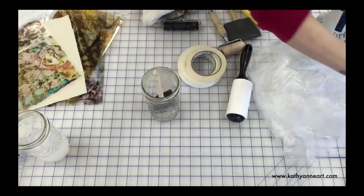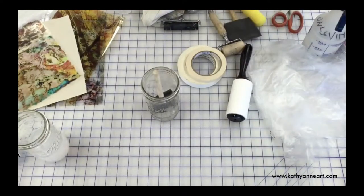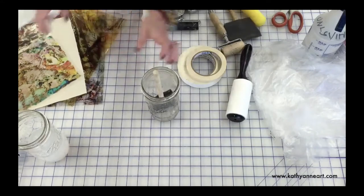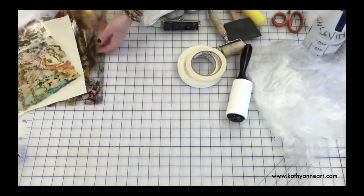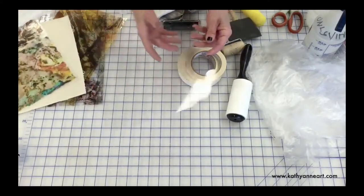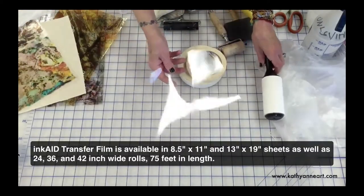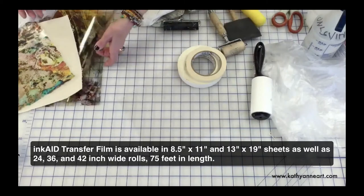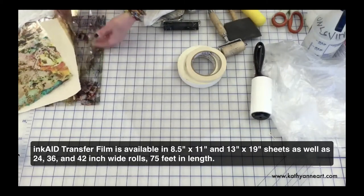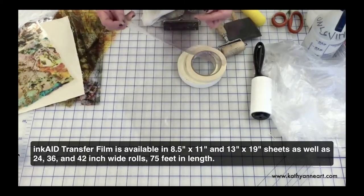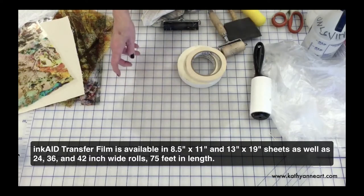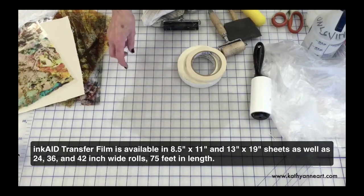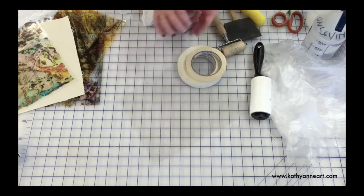Now the other thing you're going to need is some transfer film. The transfer film comes in eight and a half by 11 packs and it also comes in a 24-inch wide roll. I think there are other larger widths, but I just use the 24-inch roll or the eight and a half by 11.